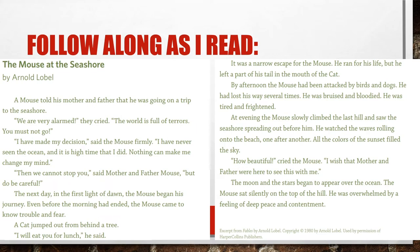He was tired and frightened. At evening, the mouse slowly climbed the last hill and saw the seashore spreading out before him. He watched the waves rolling onto the beach, one after another. All the colors of the sunset filled the sky. 'How beautiful,' cried the mouse. 'I wish that mother and father were here to see this with me.' The moon and the stars began to appear over the ocean. The mouse sat silently on top of the hill. He was overwhelmed by a feeling of deep peace and contentment — we talked about how contentment means feeling satisfied or happy.